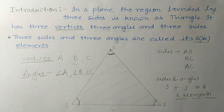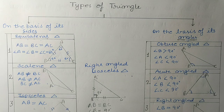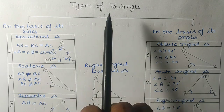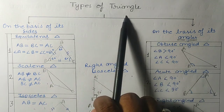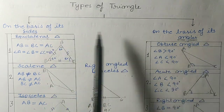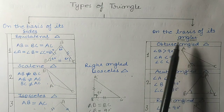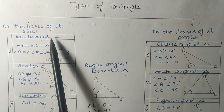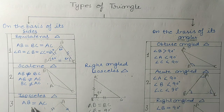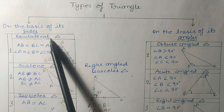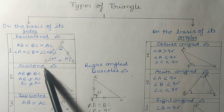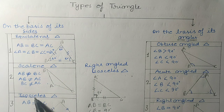After that we covered the topic 'types of triangle.' A triangle is divided on the basis of its sides and on the basis of its angles. On the basis of sides, triangles are of three types: the first is equilateral triangle, the second is scalene triangle, and the third is isosceles triangle.